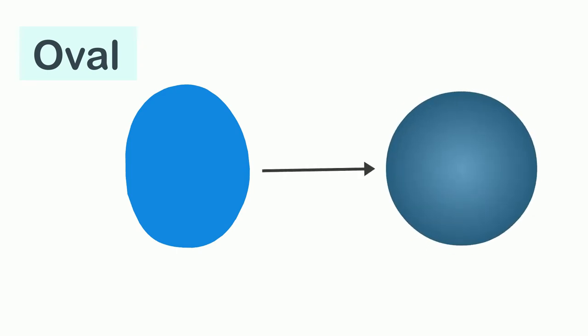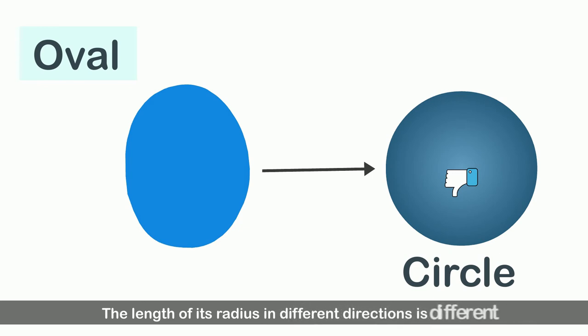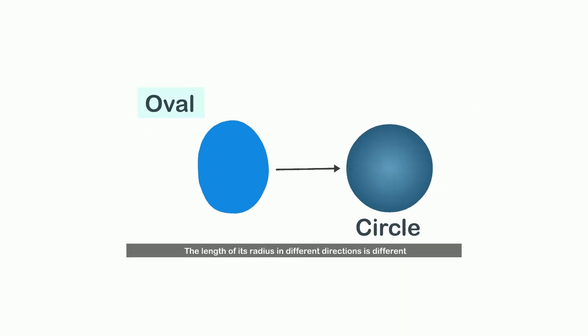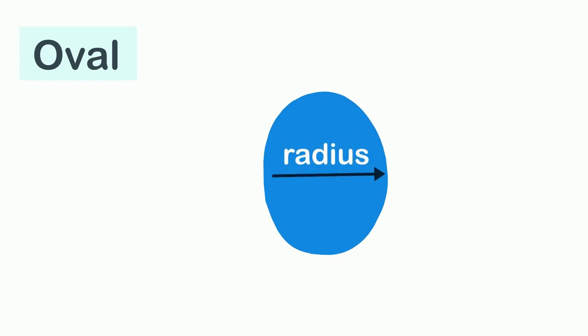This shape is known as an oval. It looks similar to a circle as it does not have any sides or corners and is made up of a curvy line. But unlike the circle, it is not completely round — it has an elongated shape. Unlike a circle, the length of its radius in different directions is different. For instance, the radius in this direction is four centimeters, but in this direction it is two centimeters.